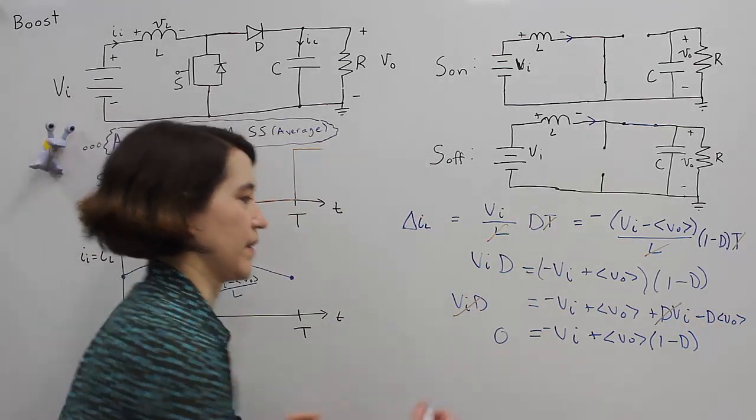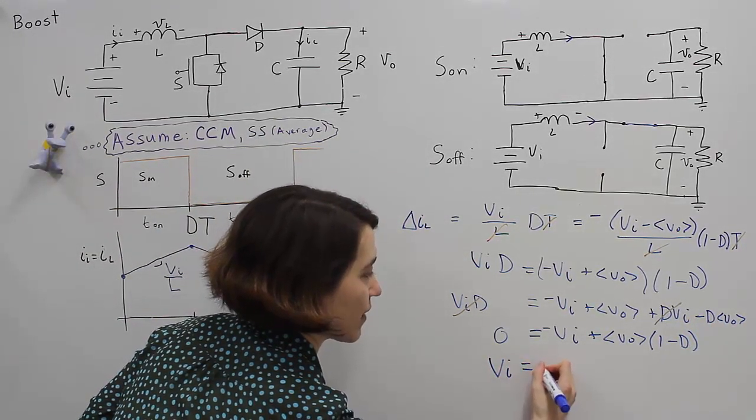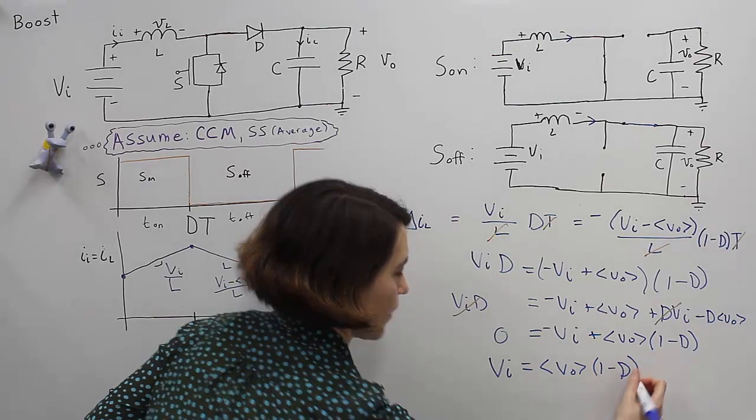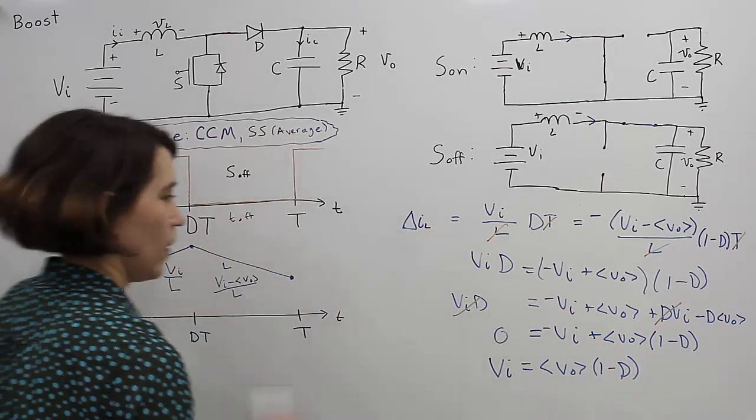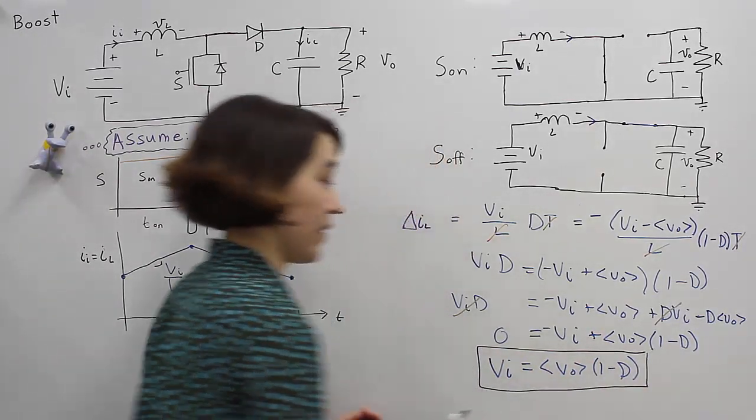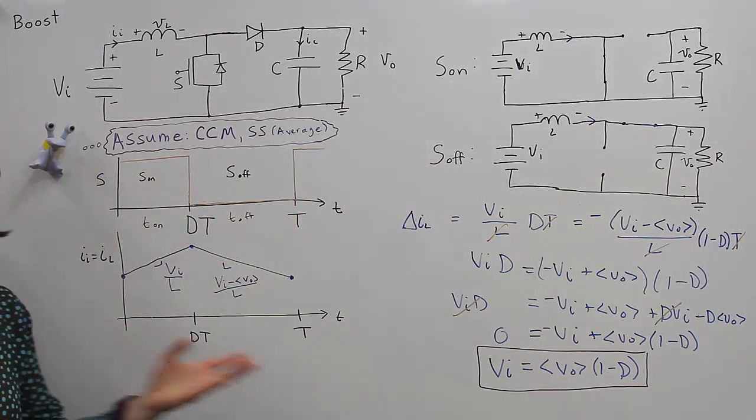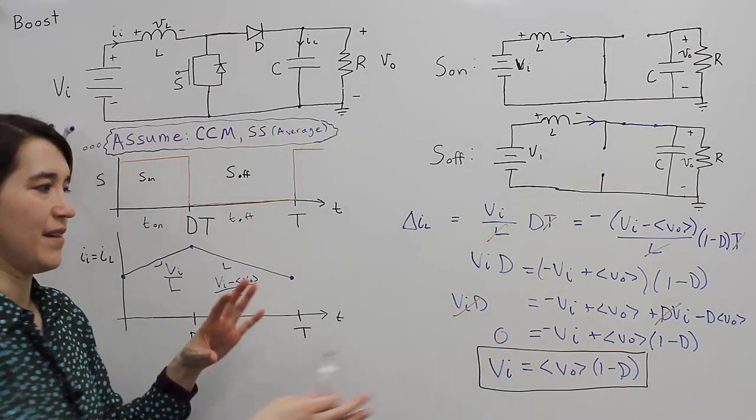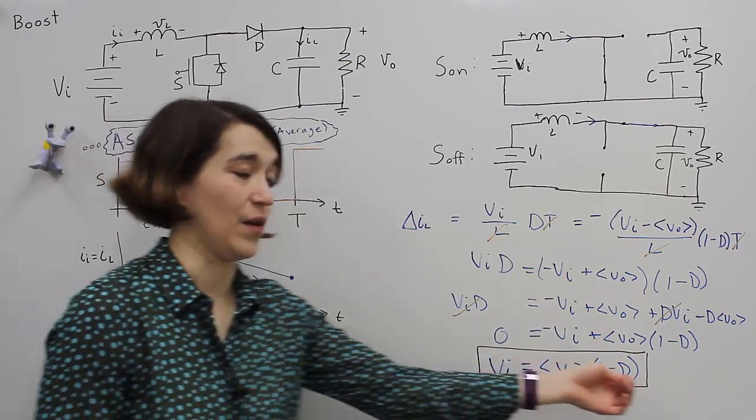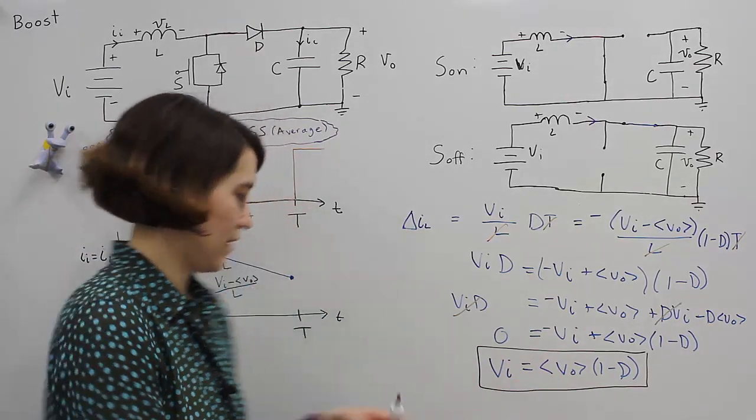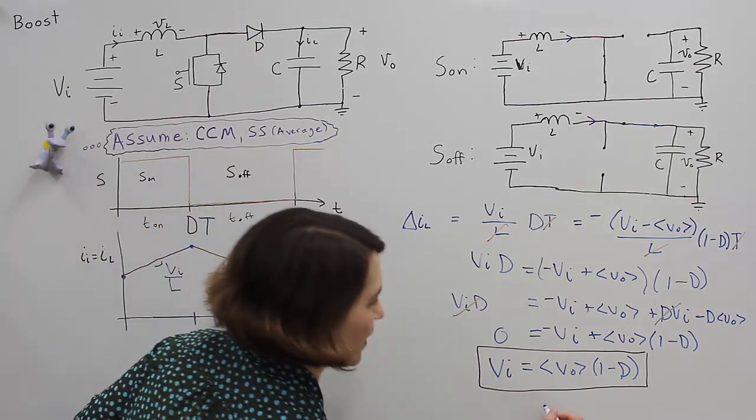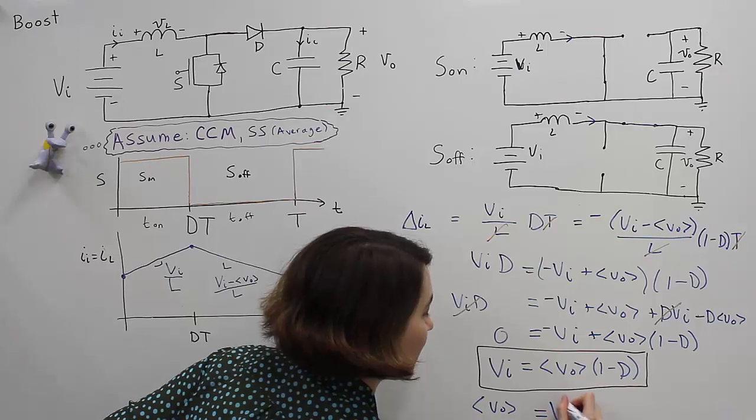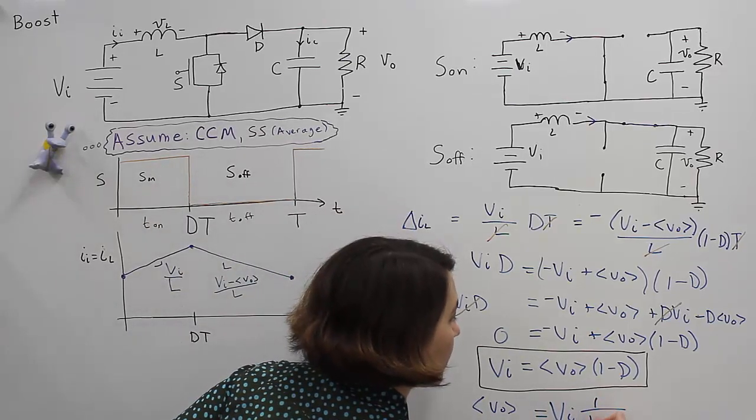And for simplicity, we can move this guy over here. So here's one way to write this expression. 1 minus D, parentheses. So here is one way to write this equation. So if we know the V out that we want, the V in that we want, then we can calculate the D based on that. And we can figure out the values. Or if we know our V in and we know our D, we can calculate our V out. So one way that if this is more commonly written is defined V out, the average V out, you move this down here. So it's V in times 1 over 1 minus D.